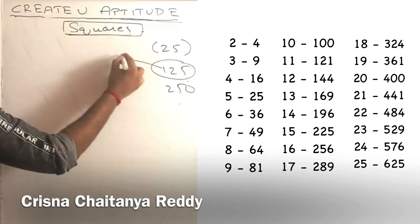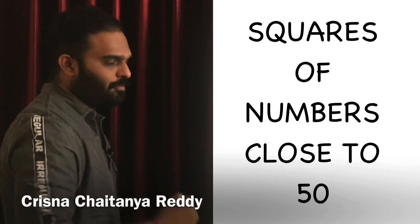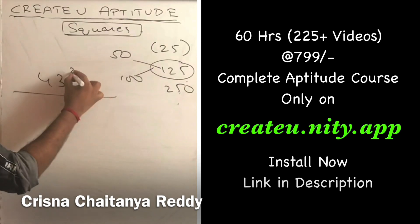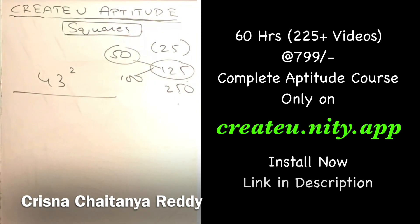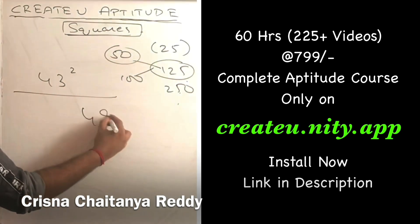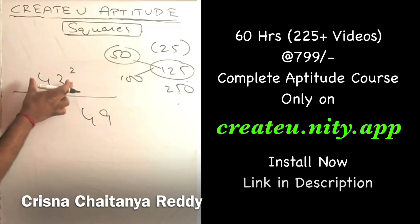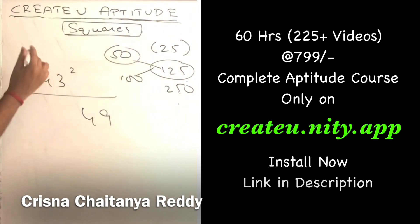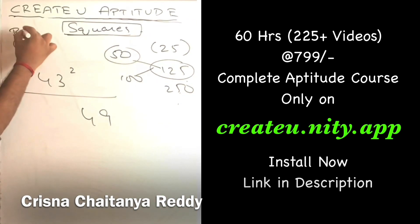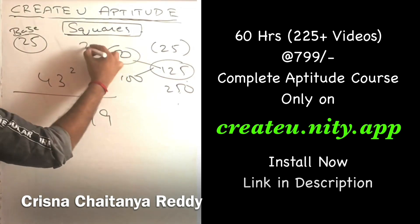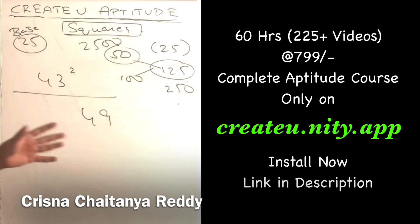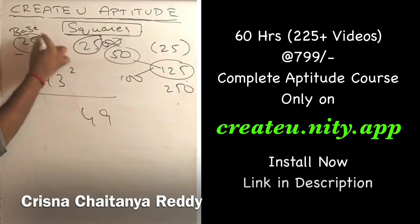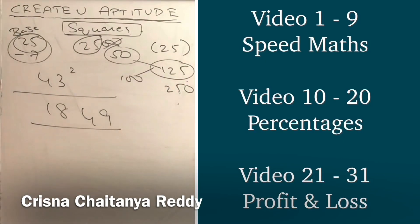For example, 43 squared - this number is close to 50. How close? 7 close to 50. So 7 squared is 49 - this is my half answer. It is close to 50 but less than 50, so when it is less than 50, subtract that distance from 25. Because 50 squared is 2500, that's why we use 25. So 25 minus 7 is 18, and your answer is 1849.